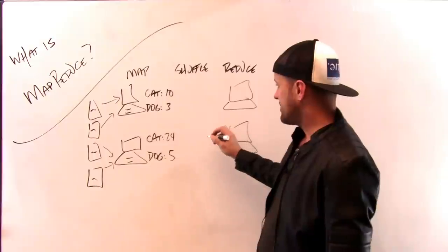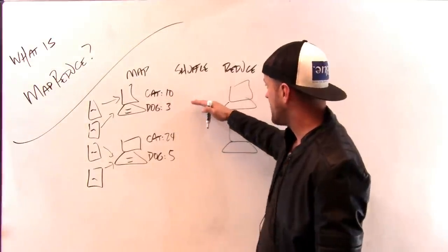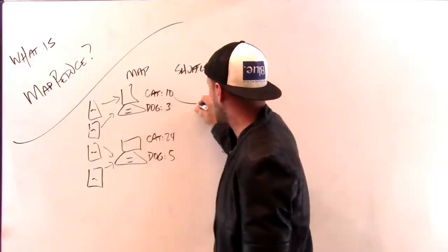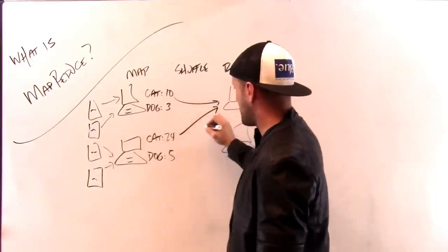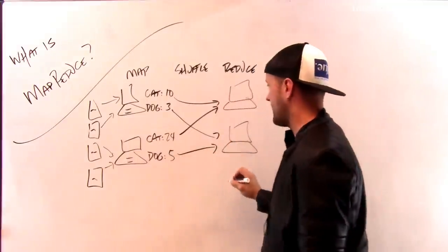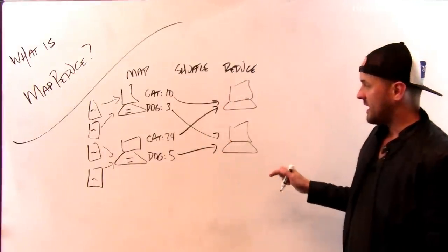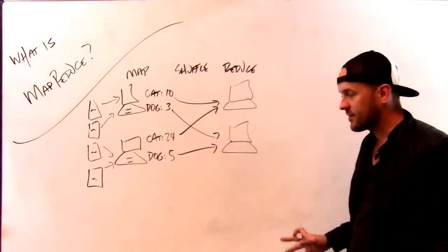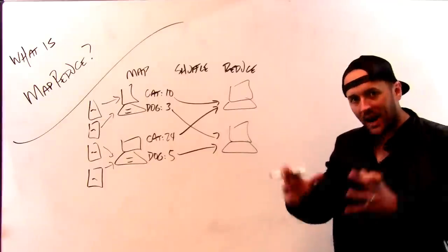What the shuffle stage is going to do is it's going to sort these keys so that the reduce stage gets the same key. So in this case, this reducer is going to get all the cat keys, and this reducer is going to get all the dog keys. And all I do in the reduce stage is I take the results from the map stage and I combine them together.